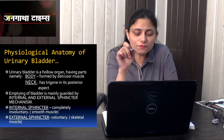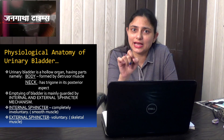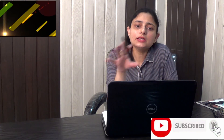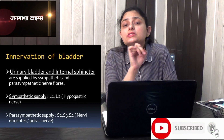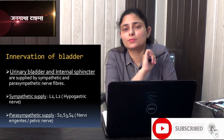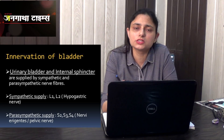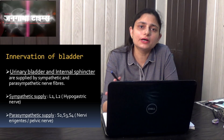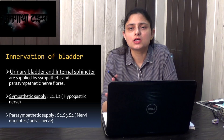That is the physiological anatomy of the bladder. Next is the innervation of the bladder — that is, the nerve supply. The urinary bladder and the internal sphincter are both supplied by the sympathetic nerves and the parasympathetic nerves.